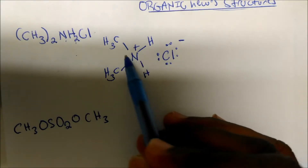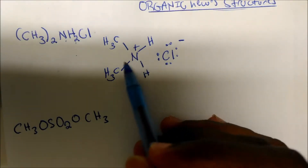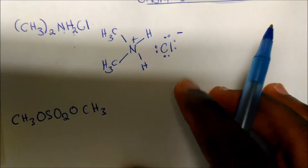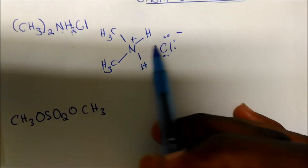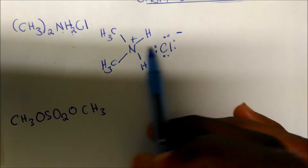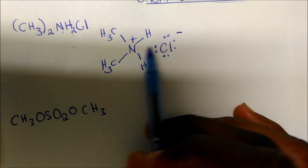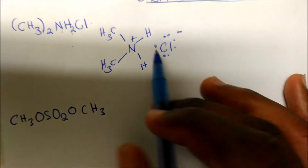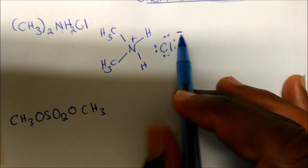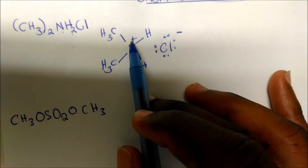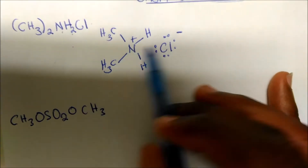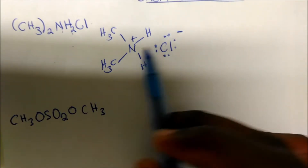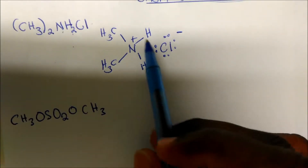Formal charge we'll touch on in the next video, but just know that this all has to do with formal charge. Chlorine actually serves as a counter ion to balance out these charges — giving a minus charge and a positive charge. This is basically the only way of stabilizing the molecule.